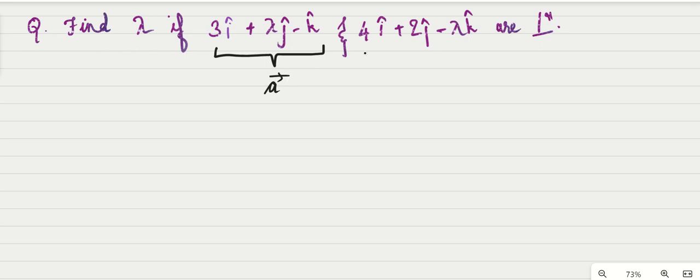This is my vector A and this is my vector B. Now here it is said that we must find lambda and these two vectors are perpendicular.